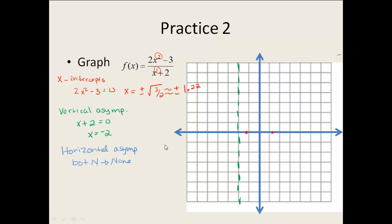To finish our graph, we do a table of values. I need to pick values in all parts of the graph: to the left of the asymptote, between the asymptote and my zeros, between the zeros, and to the right of my zeros. So my table might get fairly big. I'll pick negative 3, negative 4 on the left, negative 1.5 between the zero and asymptote, then negative 1, 0, 1, 2, and 3 on the right.